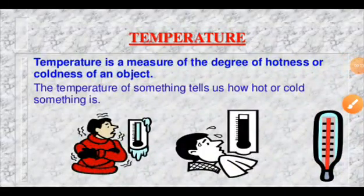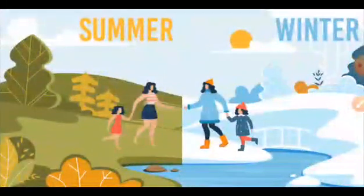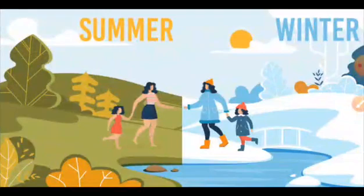Good morning to the students of class 5. In the last class we began with the topic of measuring temperature. What is temperature? Just recall. Temperature is a measure of the degree of hotness or coldness of an object, and it tells us how hot or cold something is. For example, during the summer season you feel hot and during the winter season you feel cold. So why does this happen?